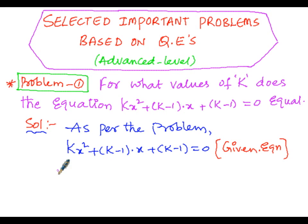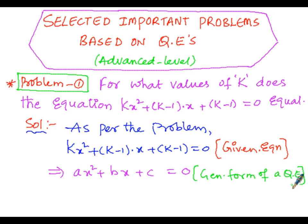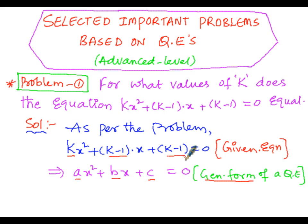This is in the form of ax² + bx + c = 0, the general form of the quadratic equation. The coefficient of x² is 'a' in the general form, while in the given equation it is k. The coefficient of x is 'b' in the general form, and (k-1) in the given equation. The constant is 'c' in the general form and (k-1) in the given equation.